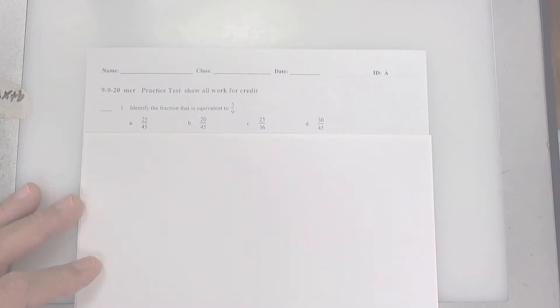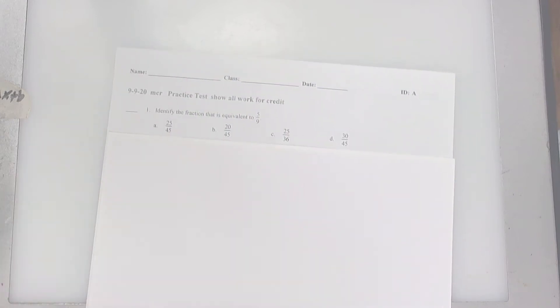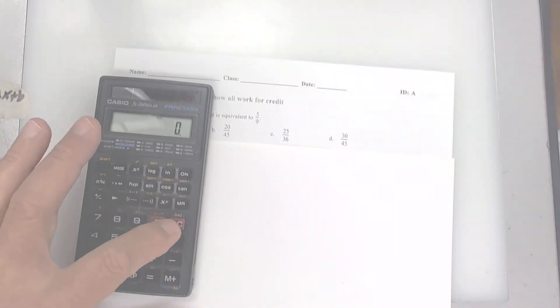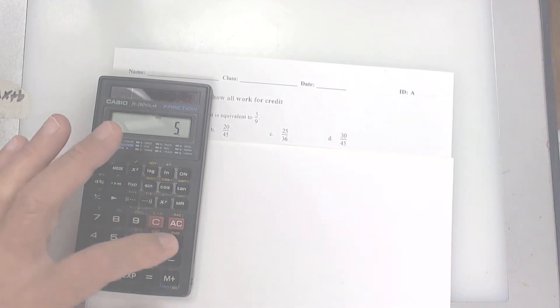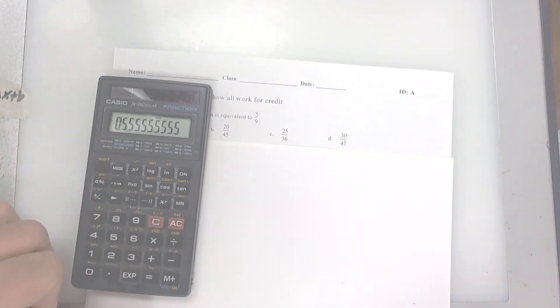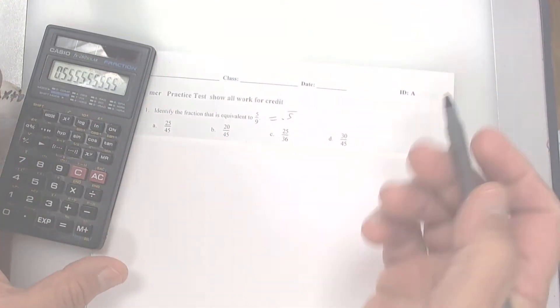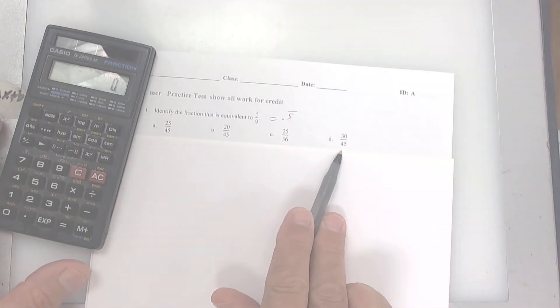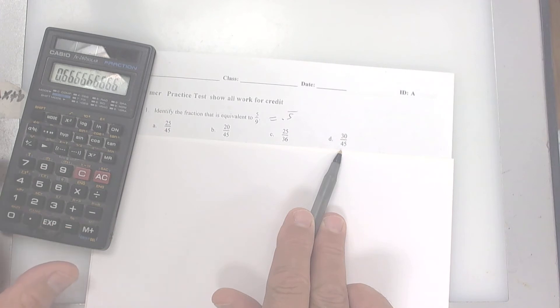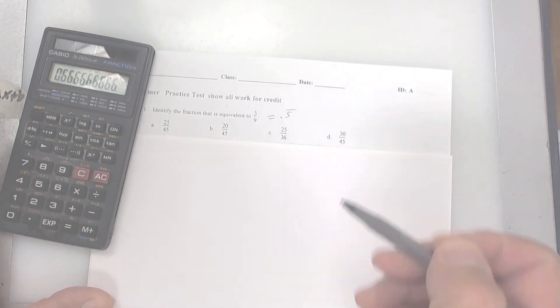Let's take a look here. Identify the fraction that's equivalent to this. Well, the best way to do that is really just take your calculator. Watch. You could reduce it. Five divided by nine, I get 0.5 repeating. So you're looking for one that's 0.5 repeating.